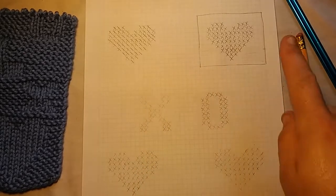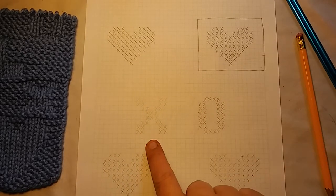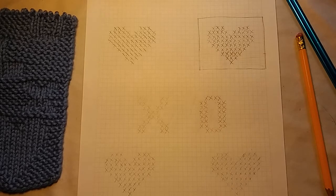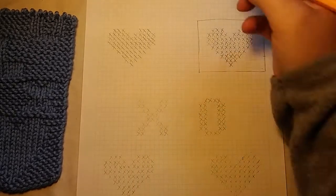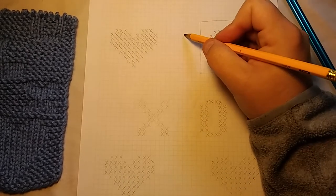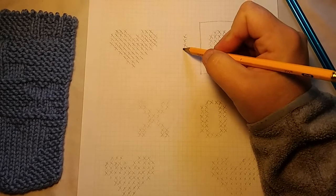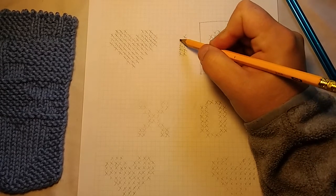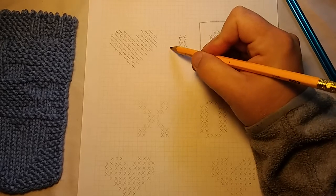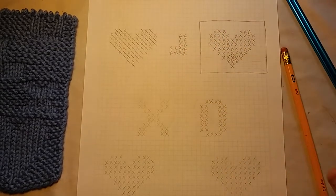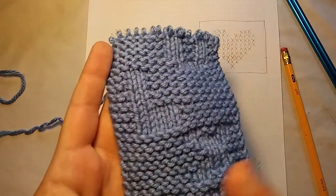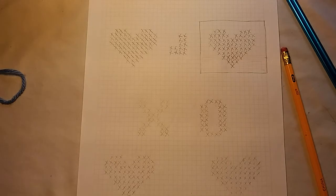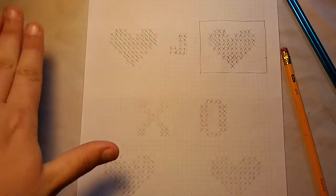And you draw your design. Like I said, it can be hearts. I have an X, an O, more hearts. You can do letters, but please keep in mind that if you do letters, make them backwards on here. So, if you were to do an L, you would do your L backwards. Because if you don't do your L backwards, it will be backwards when you go to put it in the knitting pattern. So, please, learn from my mistakes and make letters backwards.